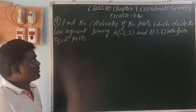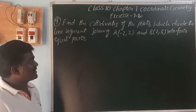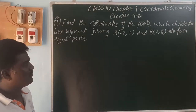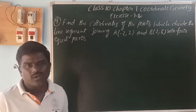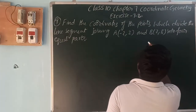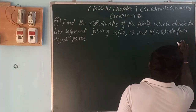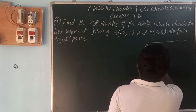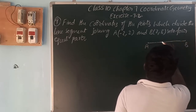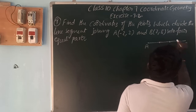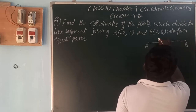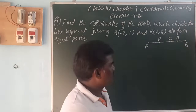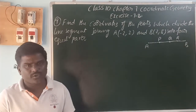Here, find the coordinates of the points which divide the line segment joining A(-2, 2) and B(2, 8) into 4 equal parts. The line segment AB is divided into 4 equal parts by points P, Q, and R. So the 3 points are dividing the line segment into 4 equal parts.